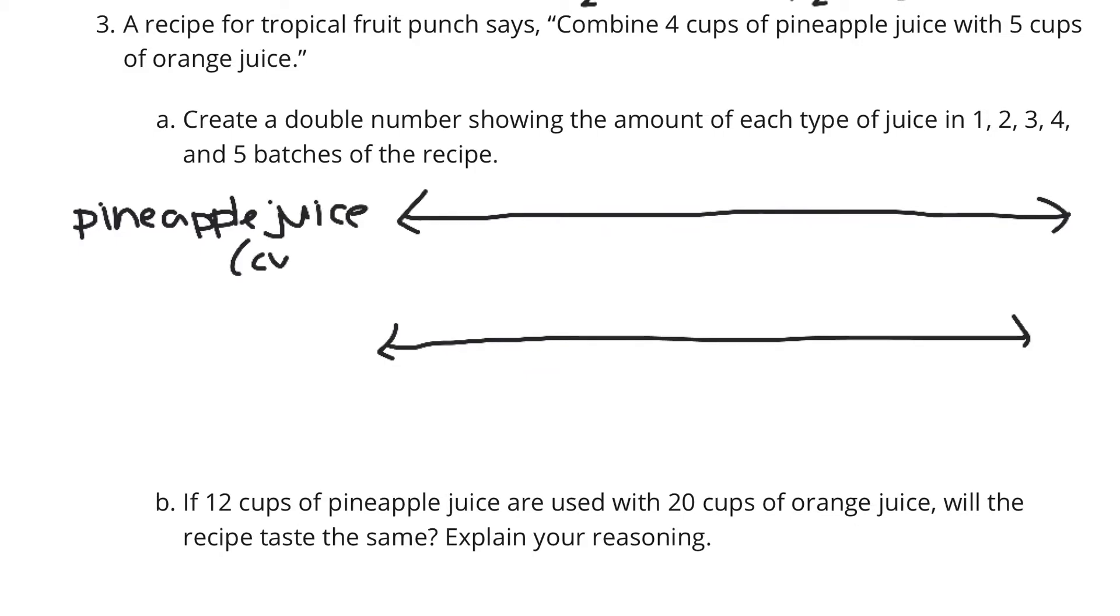Our labels here are pineapple juice. And our unit, don't forget your unit, is cups. And then we have orange juice. And our unit, once again, is cups. We're going to need 5 batches, but we're going to start our number line with our 0.